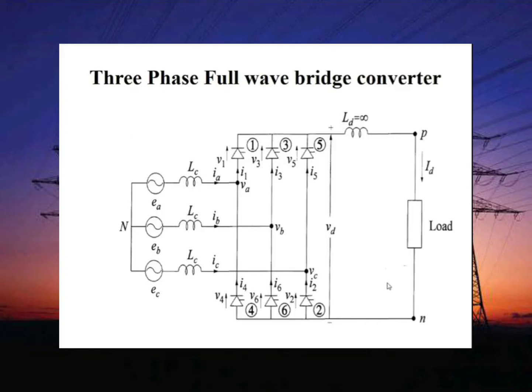Welcome to lecture number four on effects in HVDC transmission systems. In this lecture, we derive the expression of DC voltage with some ignition delay. This is a simple bridge circuit. The gate control can be used to delay the ignition of the valve. The delay angle is denoted by alpha, and the corresponding time delay is alpha divided by omega seconds.